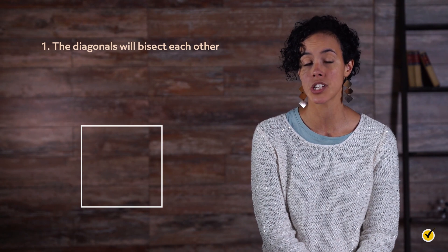Okay, only one quadrilateral left, the square. Remember, the square is a parallelogram, a rectangle, and a rhombus, so it should have all the properties of those shapes. One, the diagonals will bisect each other.